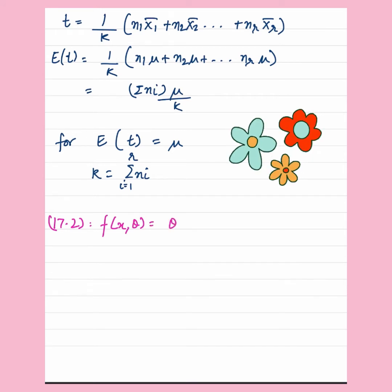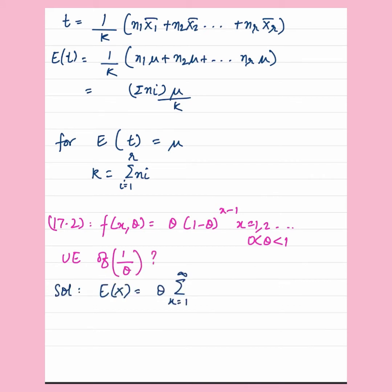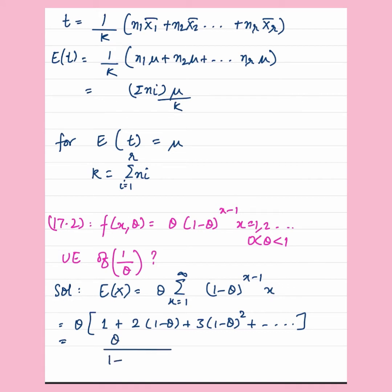We have been given a geometric distribution: f(x) equals theta times (1 minus theta) to the power (x minus 1), for x equals 1, 2 and so on. Here x denotes the number of trials before the first success. We need to find an unbiased estimator of 1 upon theta. We know that the expected value of x equals summation from x equals 1 to infinity of theta times (1 minus theta)^(x-1) times x. Upon simplification, we get that expected value of x equals 1 upon theta. Hence, X-bar is an unbiased estimator of 1 upon theta.